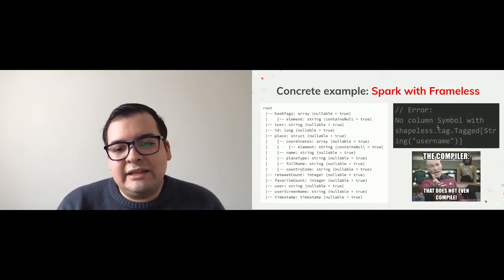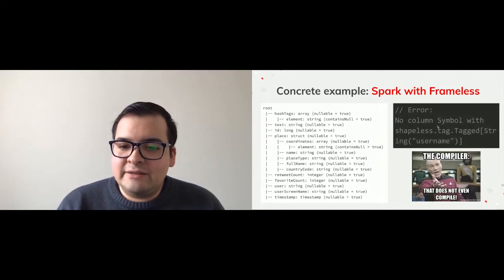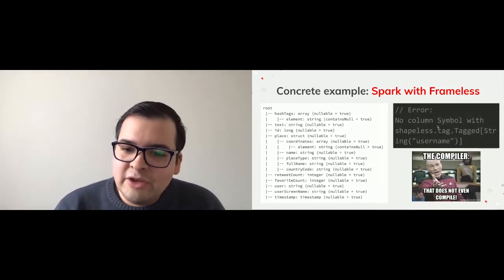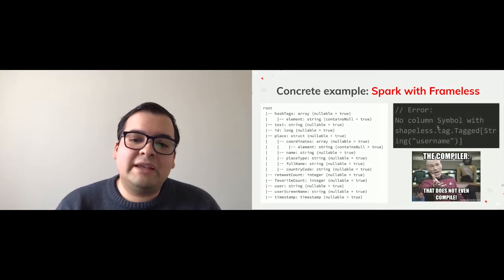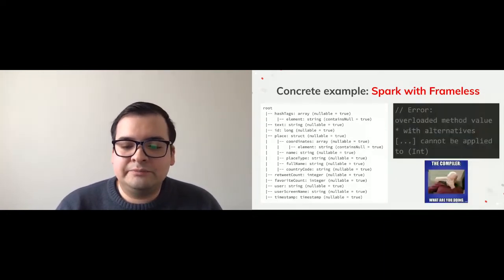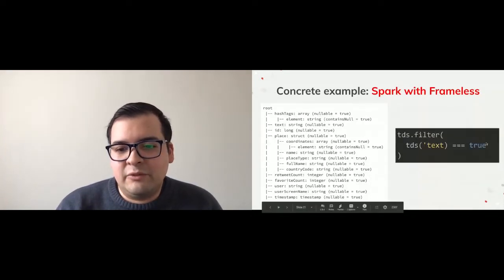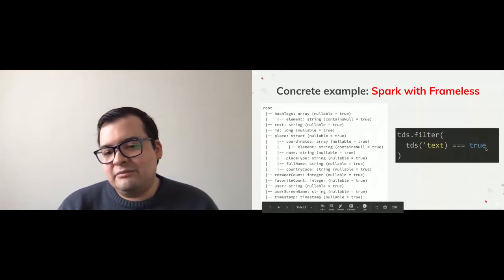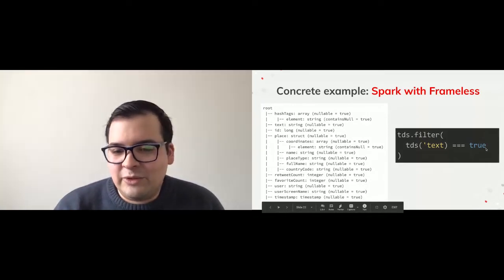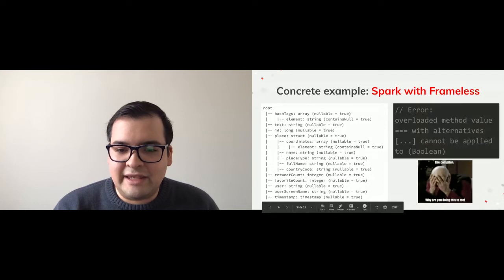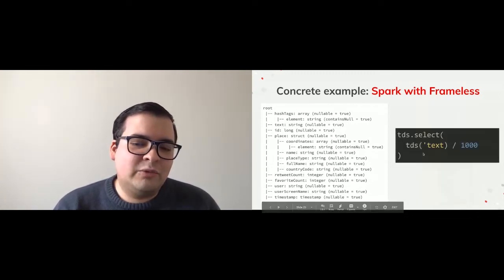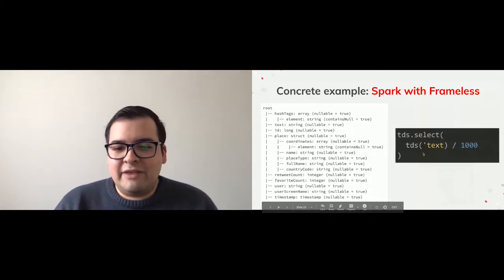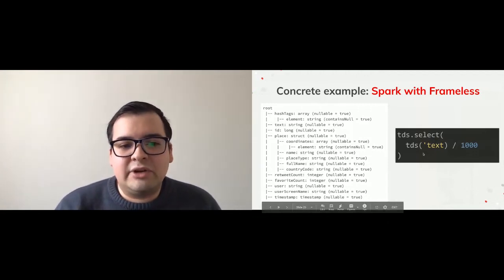With Frameless, multiplying the timestamp column by 10 causes the compiler to yell at us: you cannot apply the multiply method to a timestamp and an integer. Similarly, comparing the 'text' column of type string with a boolean 'true' value will fail at compile time — the compiler will say you can't compare a string value with a boolean value, that doesn't make sense. And dividing the string column by 1000, which previously gave us null values, is also rejected at compile time.